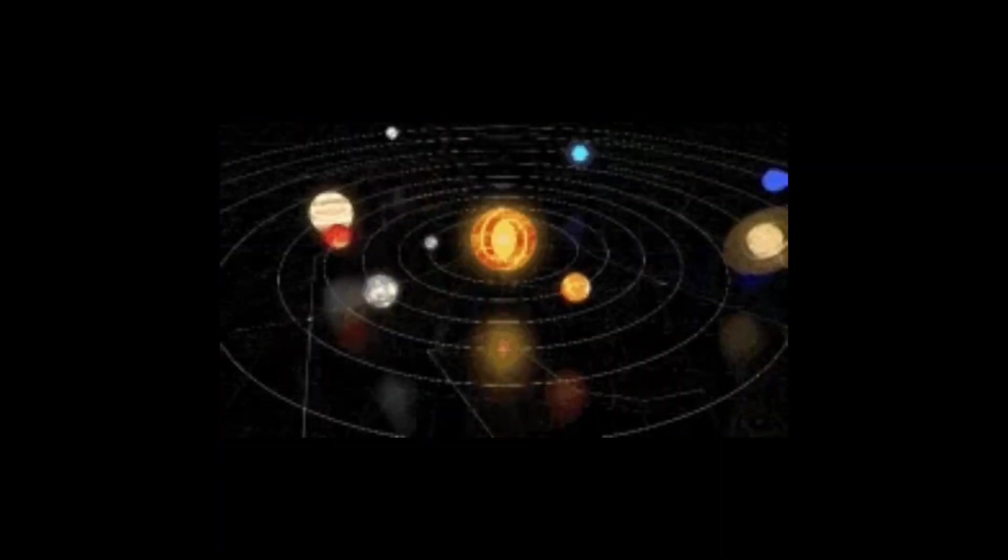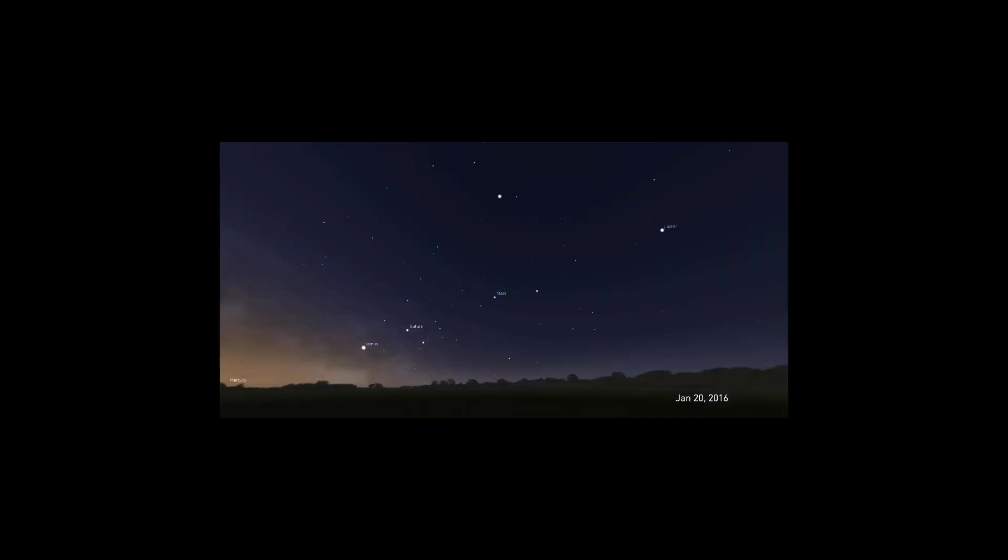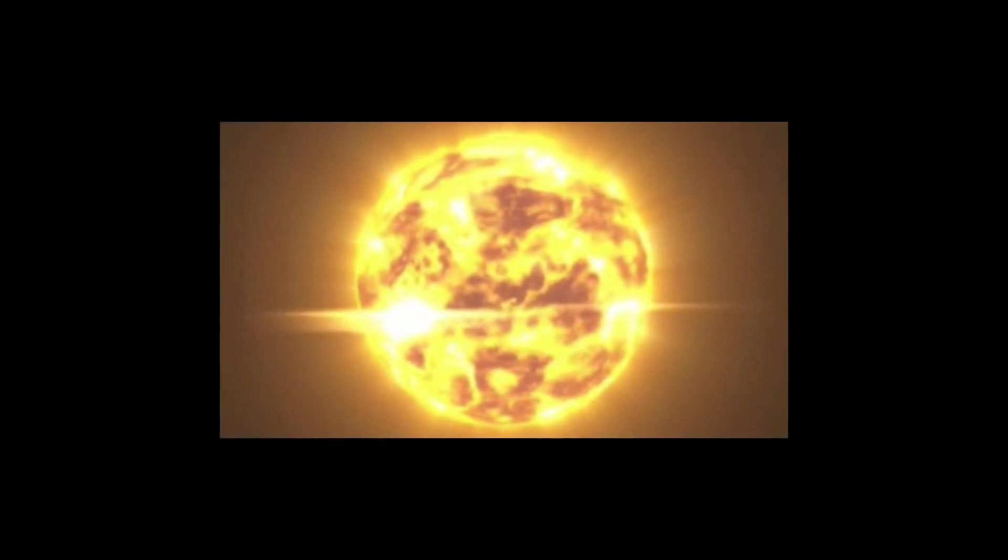Since planets lack enough nuclear fusion, they cannot produce their own light. The light you see from planets in the night sky is actually the light reflected from our sun.